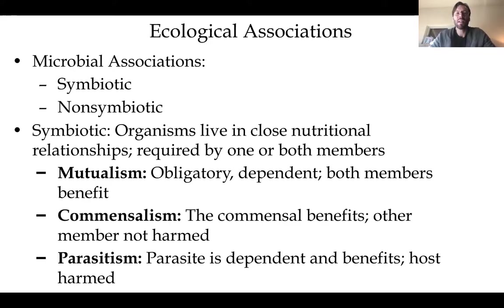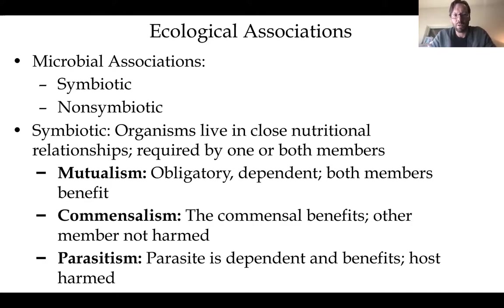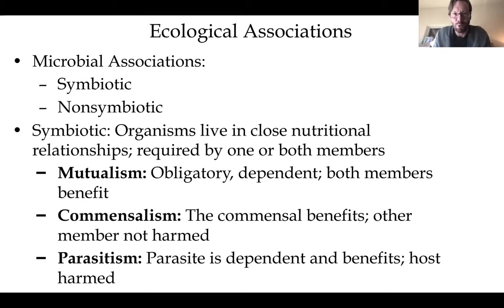When it's symbiotic, organisms live in close proximity and share or take nutrition from each other. Mutualism is a form of symbiosis where both members benefit. Commensalism is a situation where one species benefits and the other is not harmed. Symbiosis must involve different species — if it's the same species, it's just a community. Parasitism is where one benefits and the other is harmed.